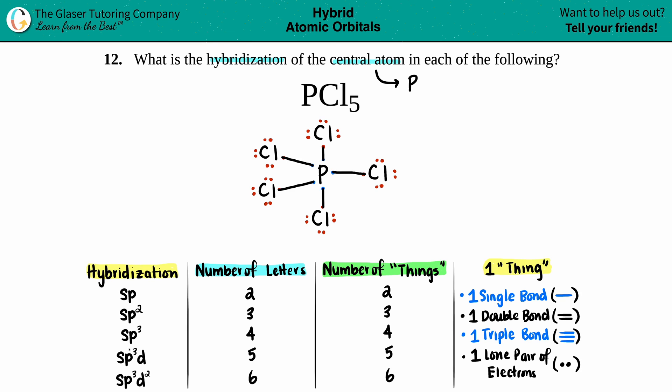The hybridization always corresponds to how many letters are in their name. For example, an sp has only an s and a p letter—that's two total letters.